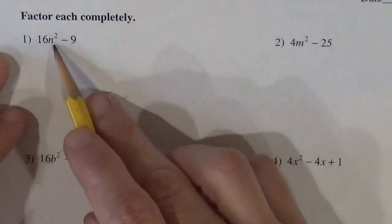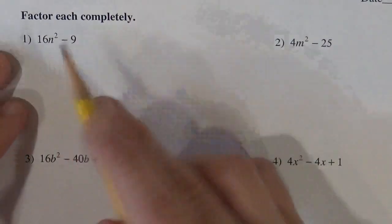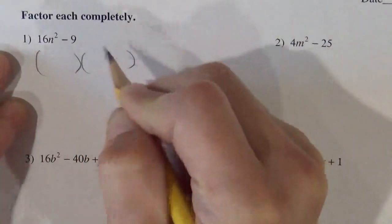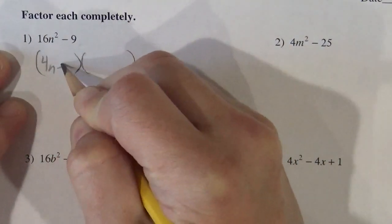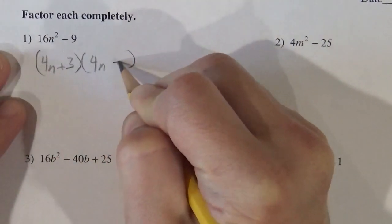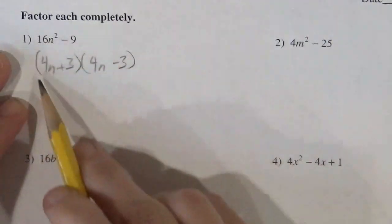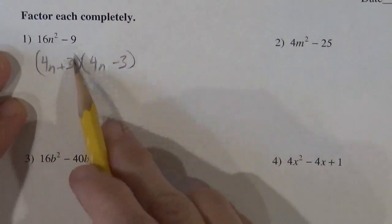So if we have two terms, it's most likely a difference of squares. These are both perfect squares. So it's going to end up being 4n plus 3 and 4n minus 3. The square root of that is 4n, the square root of that is 3.